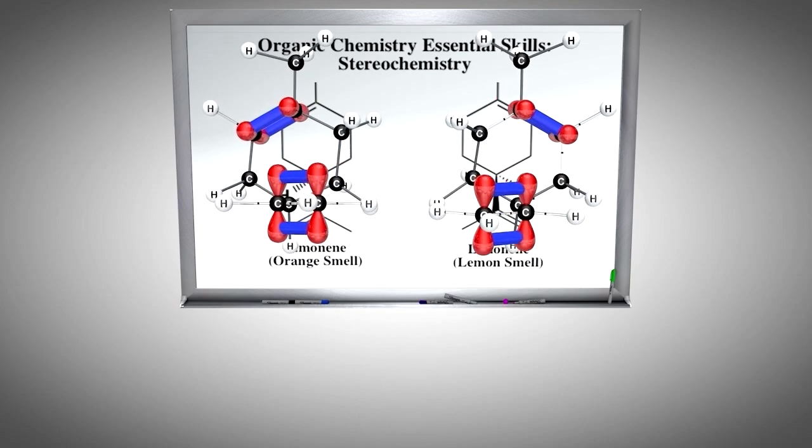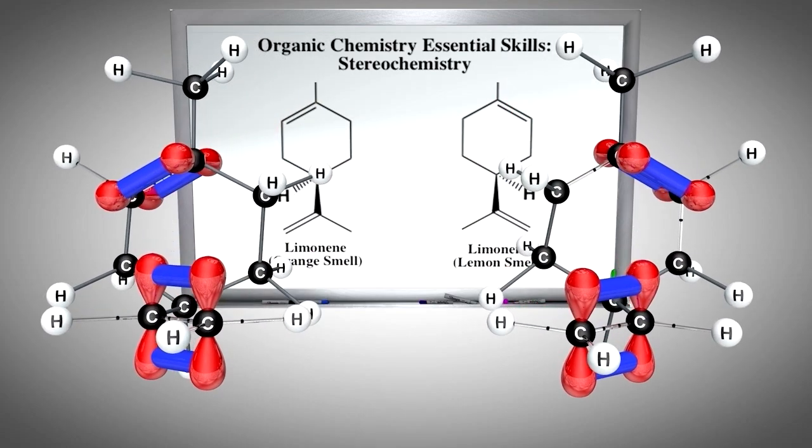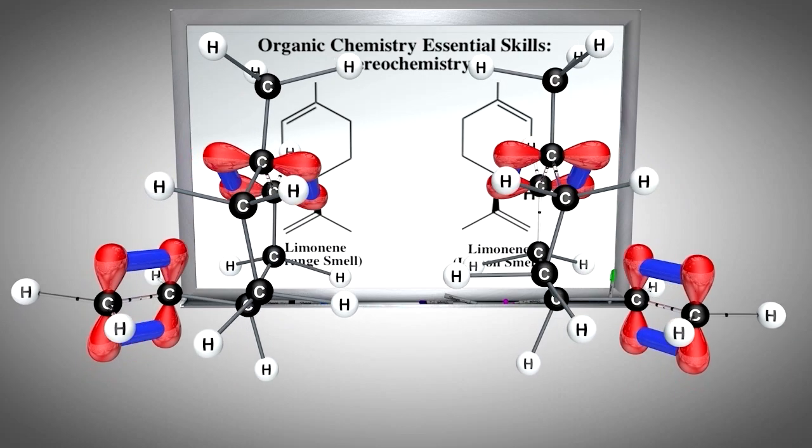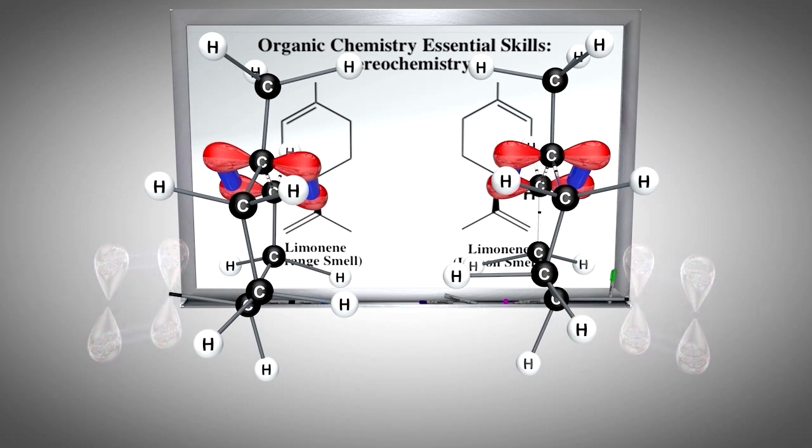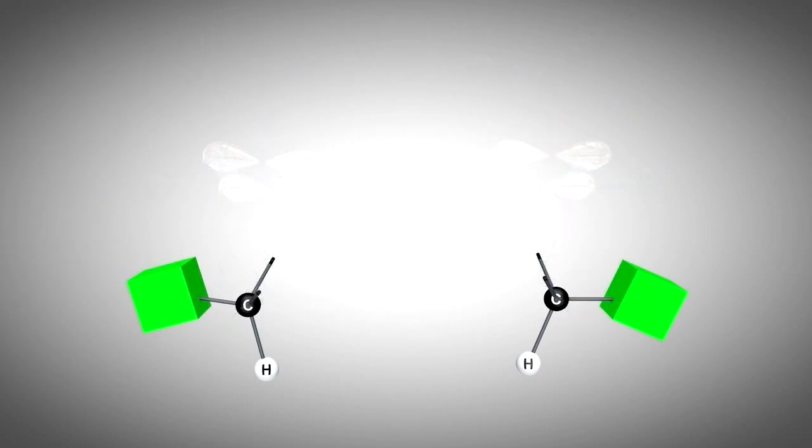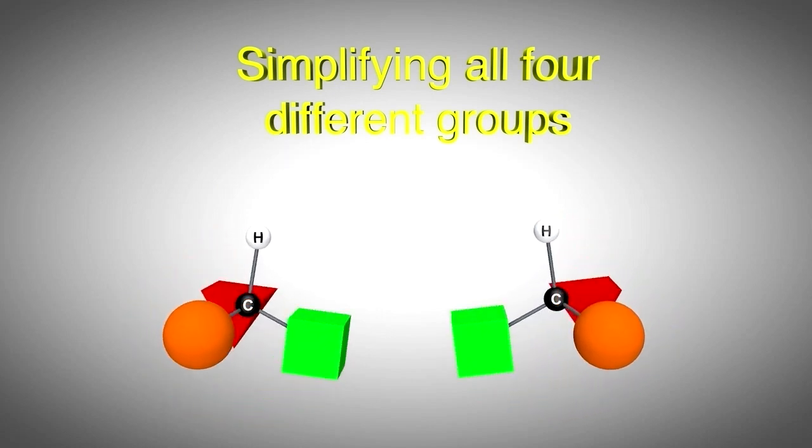This is clearly demonstrated after we mentally fold the two-dimensional Lewis structures into three dimensions. Here we see that they are actually mirror images of each other and that they are non-superimposable.